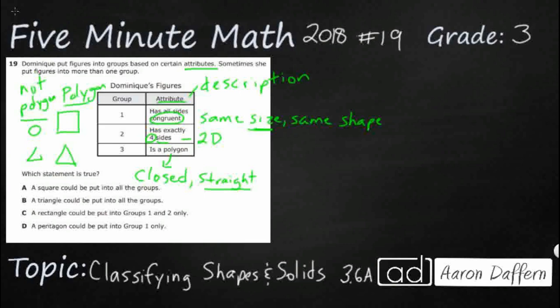So now we know what all of our terms mean. Let's look at our answers. Which statement is true? So three of these are going to be false. A square could be put into all groups. So let me draw a square as good as I can. All right. So a square. Let's pretend that's straight.